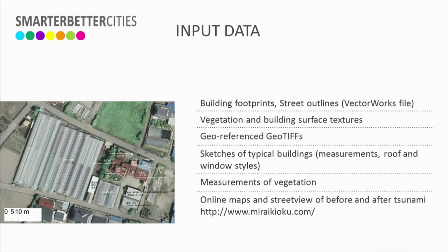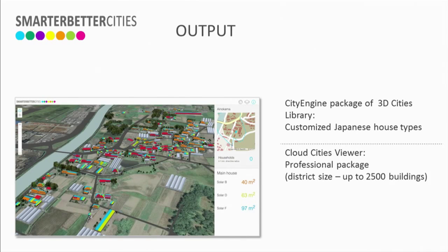The universities wanted a 3D GIS reconstruction of this region and wanted to embed these 3D models into the analysis and research workflows used at their universities. We created a customized 3D library for Esri City Engine that featured typical Japanese rural land use types in this region. From the university we were provided with 2D land survey data and satellite imagery before and after the tsunami — including building footprints, vegetation, building textures, sketches of typical buildings with measurements, roof and window styles, and details about the vegetation.